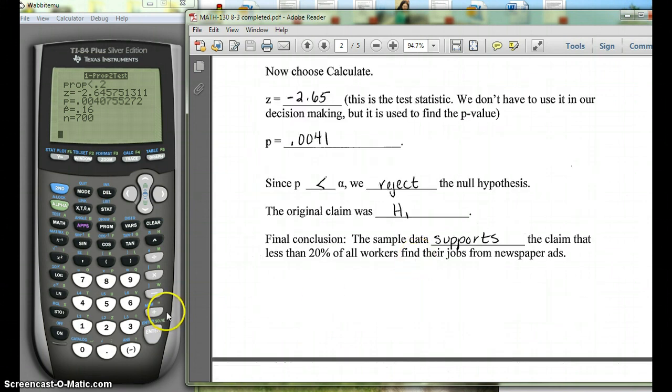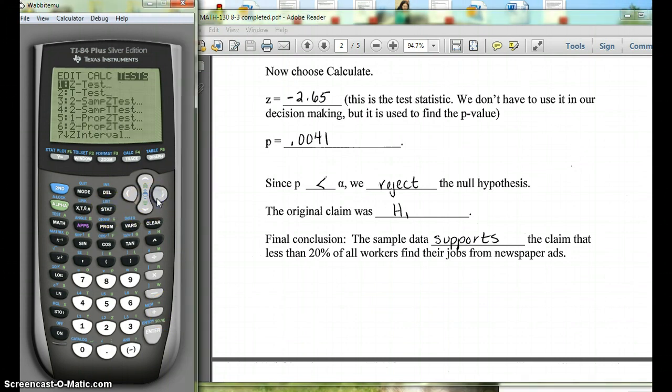So again, if we're doing a hypothesis test with a proportion and we're trying to find our p-value, you're going to hit stat, go over to tests, and choose one prop z-test number 5.